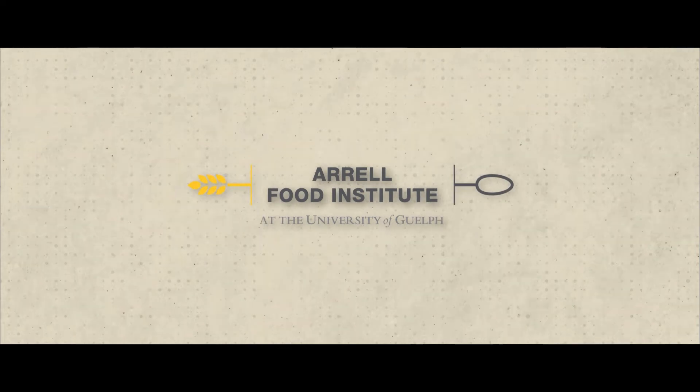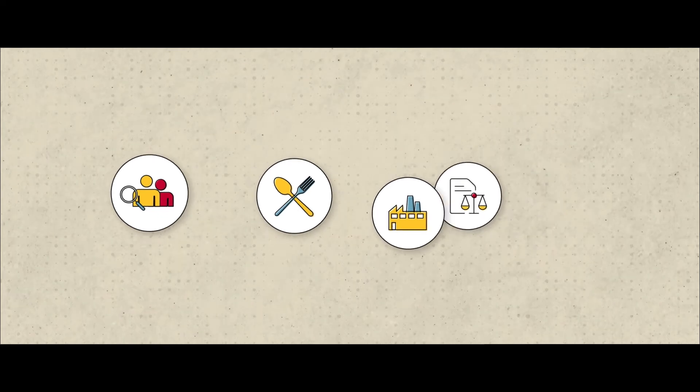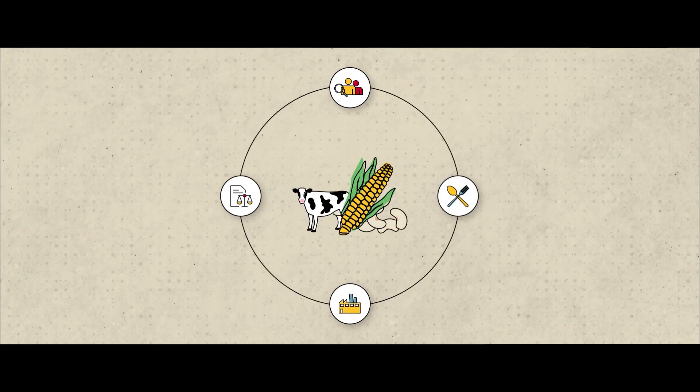And thought leaders like Tony and Anne Arrow created the Arrow Food Institute to conduct collaborative research, train the next generation of food leaders, and shape social, industrial, and governmental decisions. All to ensure food is the central priority.